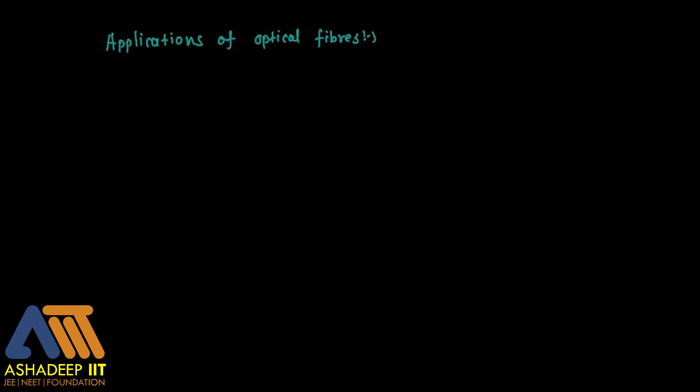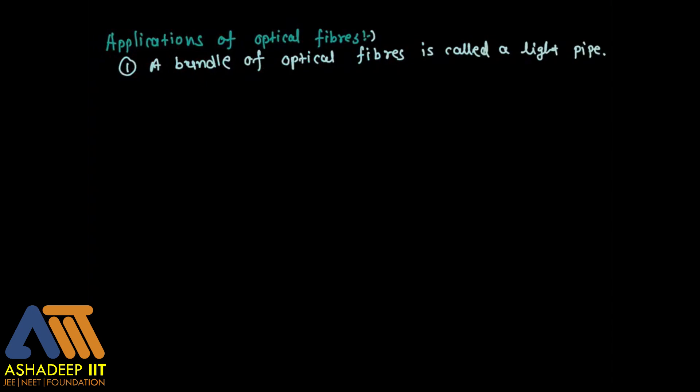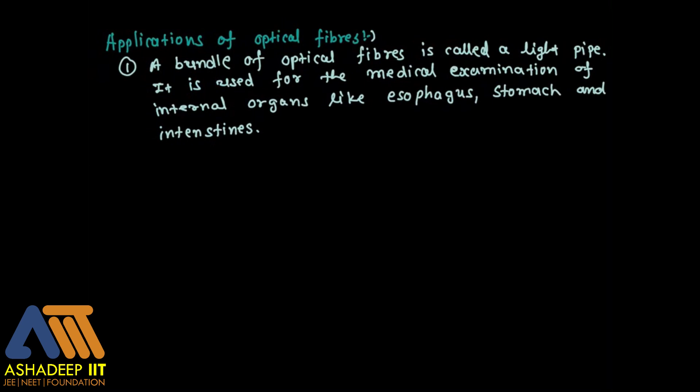Even if the fiber is bent, there is no problem, because through repeated total internal reflections, light can easily travel very long distances. Now it is time for the applications — without applications, what is the use? Application number one: a bundle of optical fibers is called a light pipe, and it is extensively used in medical examinations.